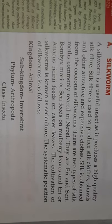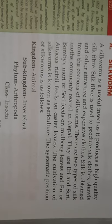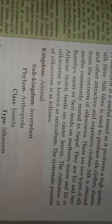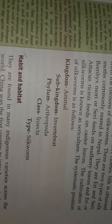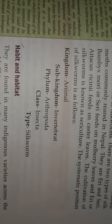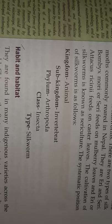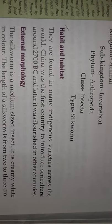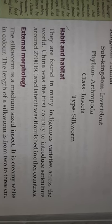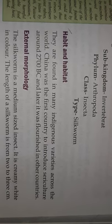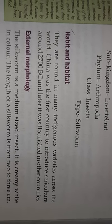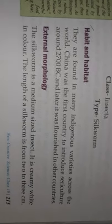The cultivation of silkworm is called sericulture. In terms of classification, silkworm belongs to the animal kingdom, sub-kingdom invertebrate, phylum Arthropoda, and class Insecta. China was the first country to introduce sericulture around 2700 BC, and later it flourished in other countries.